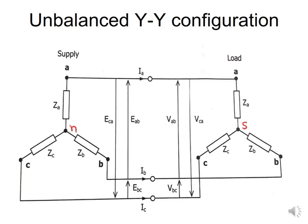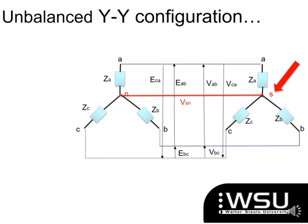I've made red markings: 'N' for the neutral on the supply side, and 'S' on the load side, which is another neutral. I'll explain why I've called it 'S'. On this slide I've drawn a line between my supply and load side showing this S value. For a three-phase system, we normally have the neutral point N. I'm introducing S on the load side, which is no longer at earth potential because we have an unbalanced system on the load side.